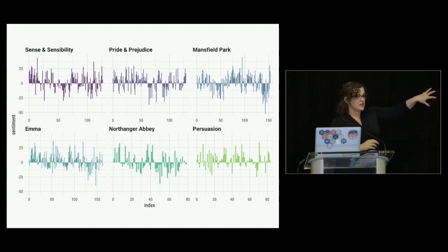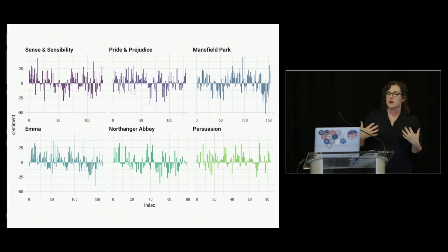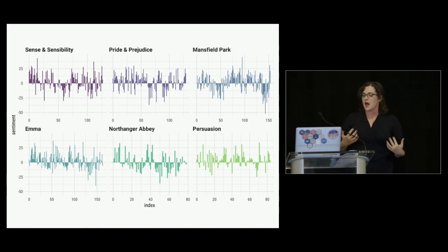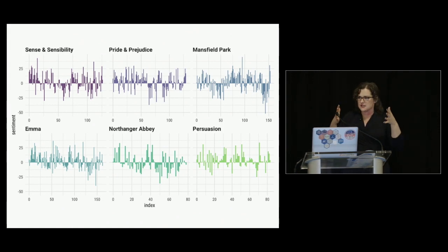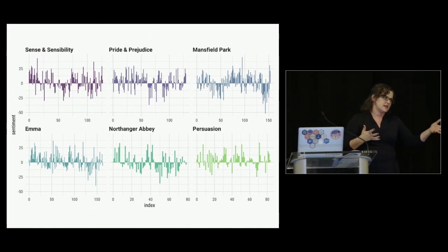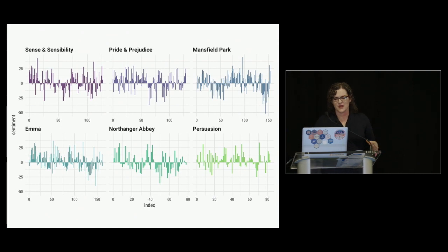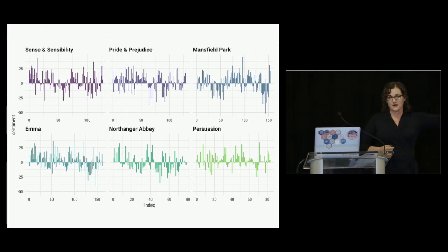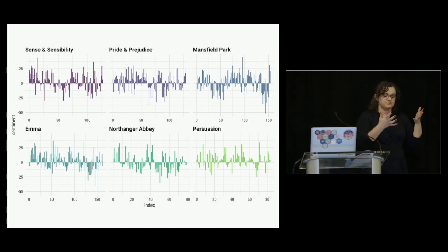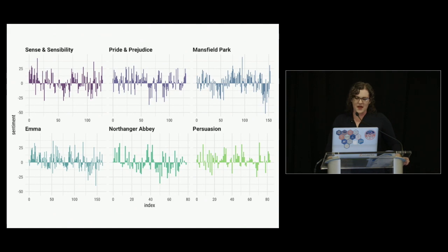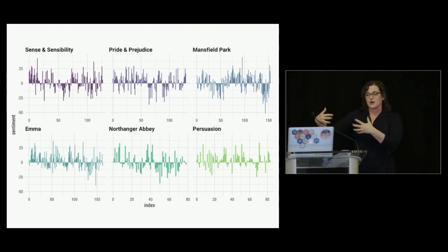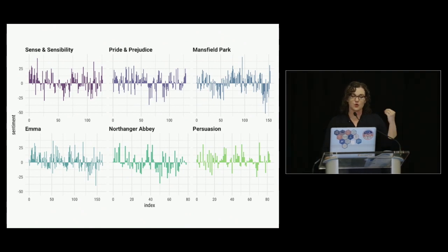This shows us through the narrative arcs of the six Jane Austen novels what sections have more positive sentiment and what sections have more negative sentiment. These sections correspond to plot events we as human readers understand as being positive or negative. For example, in Pride and Prejudice, about halfway through, the first extended section of negative sentiment is where Mr. Darcy proposes for the first time so badly and Elizabeth is so offended. And about three quarters of the way through, another large section of negative sentiment is where Lydia elopes with scandalous Mr. Wickham.